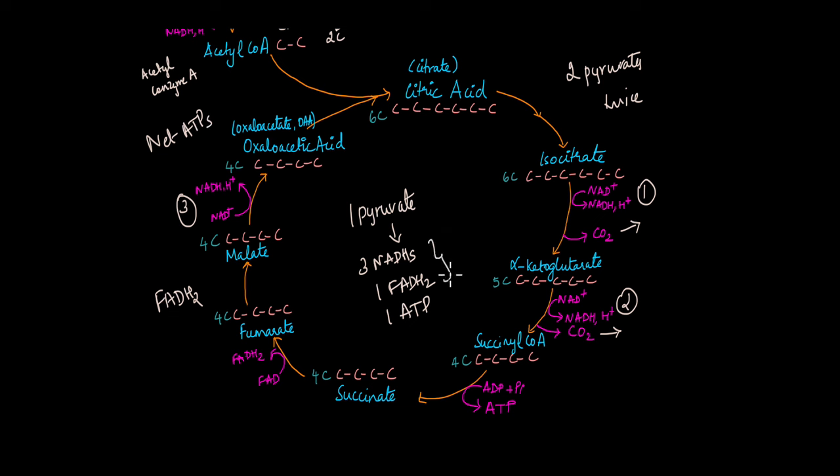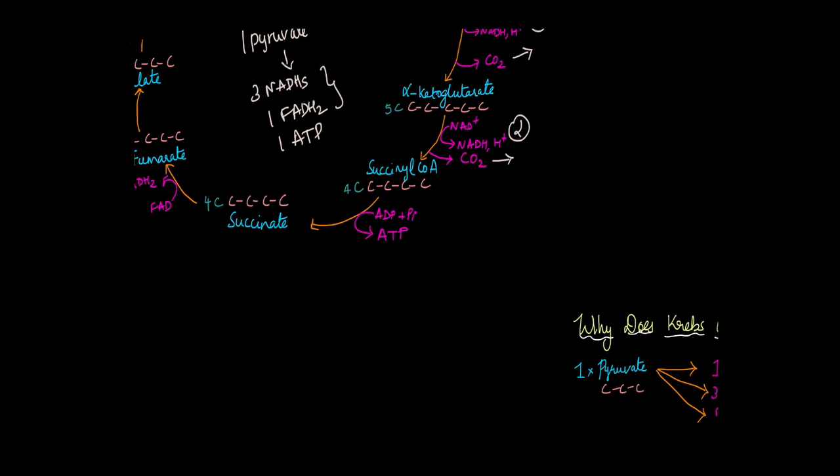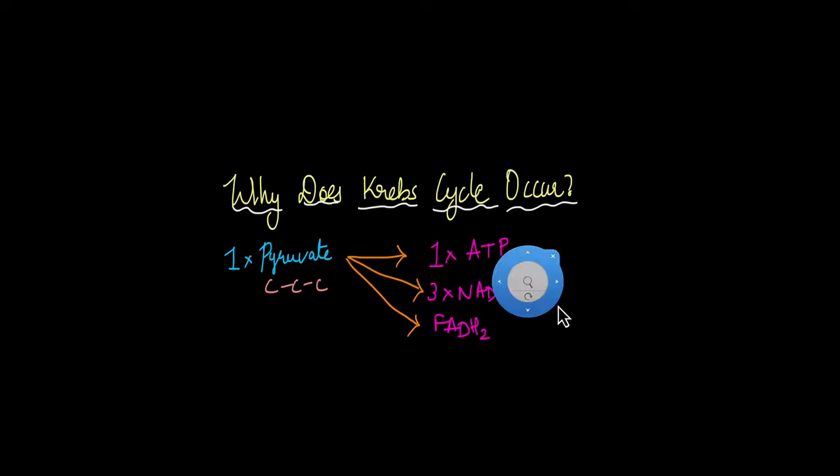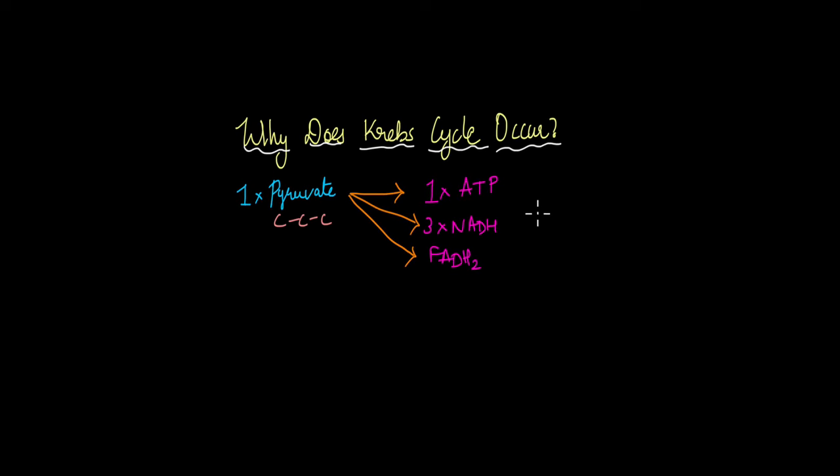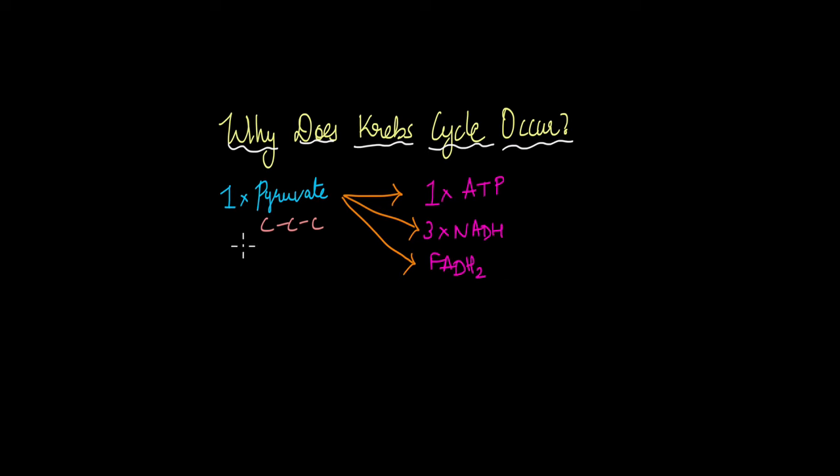So now it is up to these two, these electron carriers, to go ahead and produce more number of ATPs through the process of the electron transport chain. That is why the citric acid cycle even occurs. So it produces these many electron carriers, right? Three NADHs and one FADH2 per pyruvate. And now if you involve the second pyruvate also, from one glucose, we get two pyruvates, you get two ATPs, six NADHs and two FADH2s.